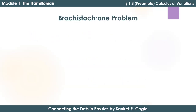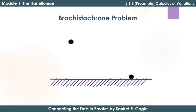Calculus of variations was developed in an attempt to solve the Brachistochrone problem. So let's have a quick look at what the Brachistochrone problem is. We have point A and point B. This dashed line shows that point B is on the ground while point A is at some height from the ground, and we are considering the situation where gravity is present.